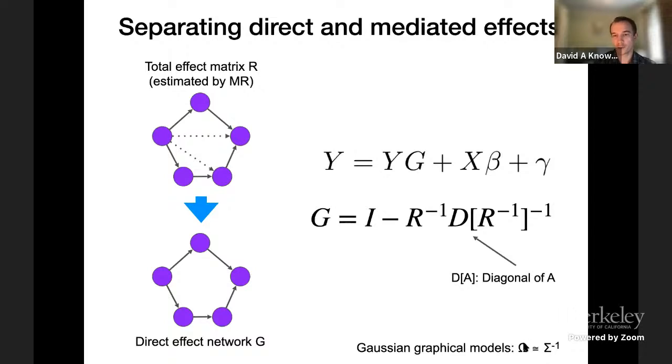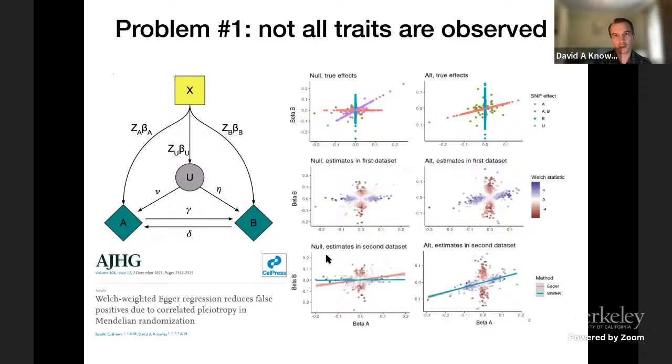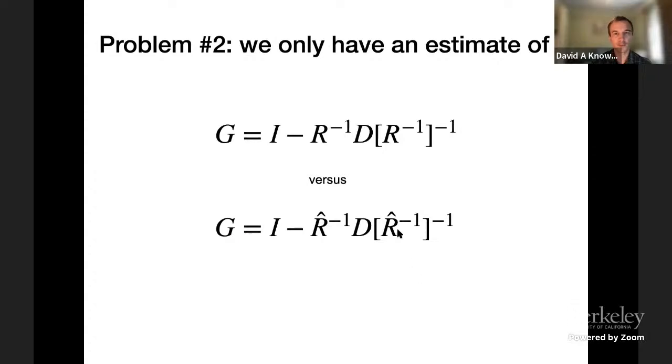There are two problems with this though. The first is even in the best case scenario, not all traits are going to be observed, so we need to worry about what gets called correlated pleiotropy, so those are confounders that themselves have a genetic component. I'm not going to go into it in any detail, but we recently published a paper with a very straightforward extension to Egger regression that copes with this. There are also some elegant mixture model-based approaches to solving this problem that are more computationally intensive but work better in some scenarios, although also worse than others. The second problem is we don't know the exact total causal effect matrix; we just have an estimate of it, R-hat. Unfortunately, this is not one of these situations where you can just plug in an estimator and have everything work out nicely. The reason for that is this matrix inverse is not very stable. You can imagine if there's a lot of noise contributing to small eigenvalues or singular values in here, then those are going to get amplified by the matrix inverse.